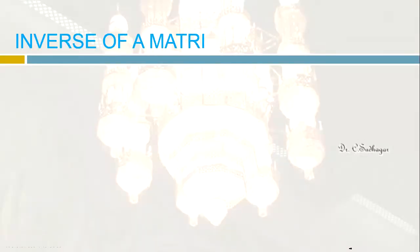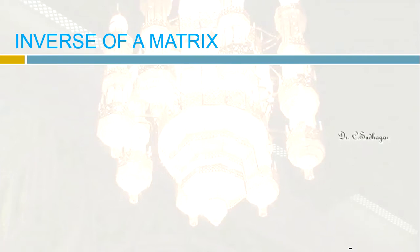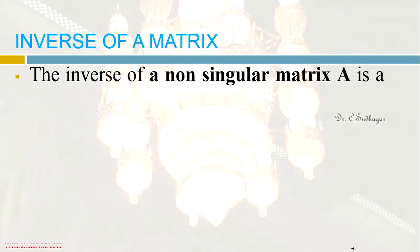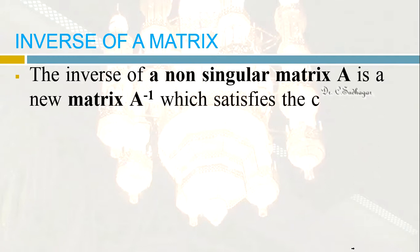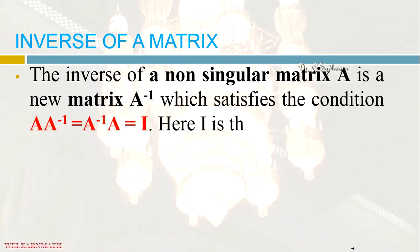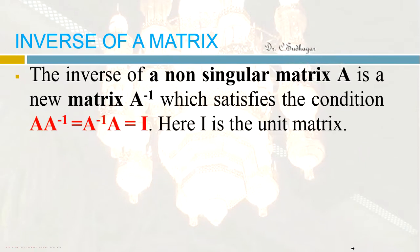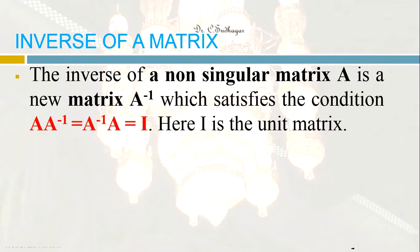Now let us come to the second part of this video: finding the inverse of a matrix. The inverse of a non-singular matrix A is a new matrix denoted by A inverse, which satisfies the condition A multiplied by A inverse equals A inverse multiplied by A, which equals I — where I is the identity matrix.